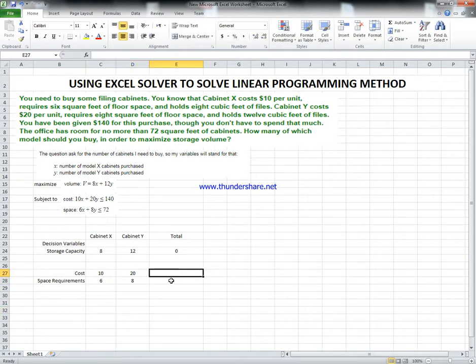Let's do the calculation for this one as well. Number of file Cabinet X cost times number to buy, plus $20 for Cabinet Y times number of Y to buy. Same applies for this one: times space requirement plus number of Cabinet Y that we should buy times the space requirement. So this is the total. Again, we can test it. We say we buy one of each - we should end up with $30 for the cost and 14 for the square feet.